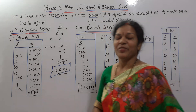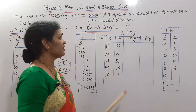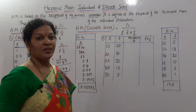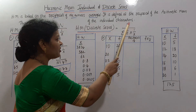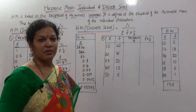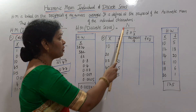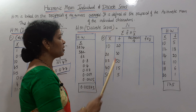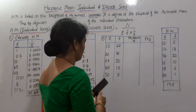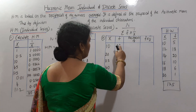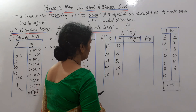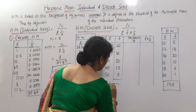Next we will go for discrete series. Discrete series formula is n / Σ(f × 1/x). As per the formula, what data is given? X and frequency are given. What do we need? N — total number of observations. The frequency totals are 50, 100, 120... so n is 120.